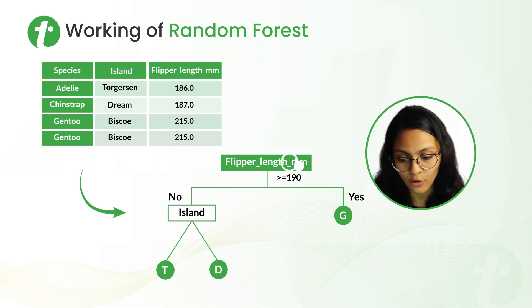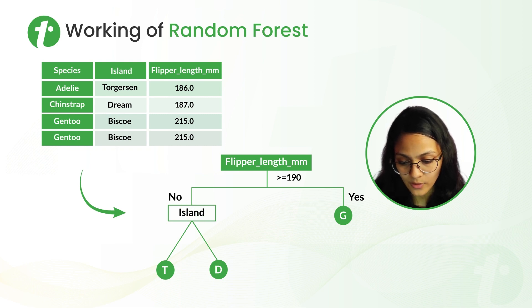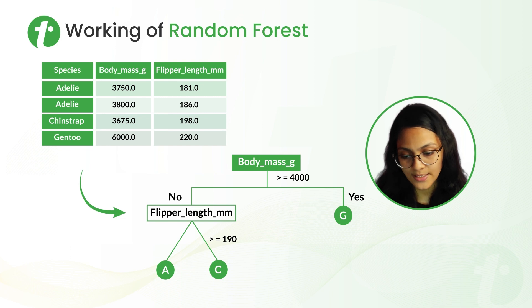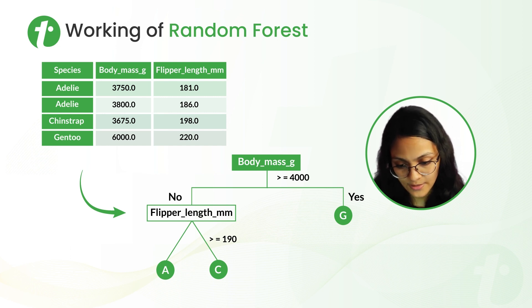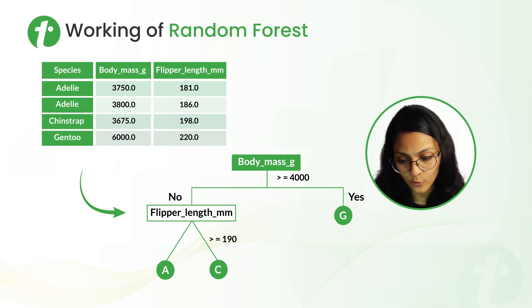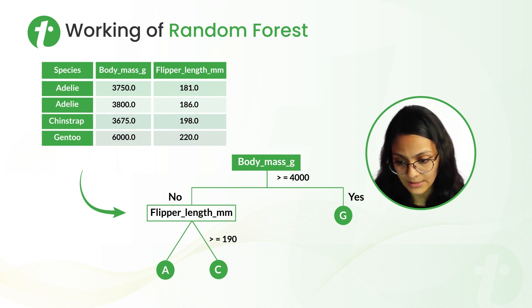For the second decision tree, we are determining the flipper length of the penguin. If it is not greater than 190, we check the island: if it is Torgersen, it is an Adelie species; if it is Dream, it's a Chinstrap species. If the flipper length is greater than 190, then the species is Gentoo. For the third random sample decision tree, we determine the body mass of the penguin. If it is greater than or equal to 4,000, then it's a Gentoo species. If not, we check flipper length: if greater than or equal to 190, it's a Chinstrap; if not, it's an Adelie.